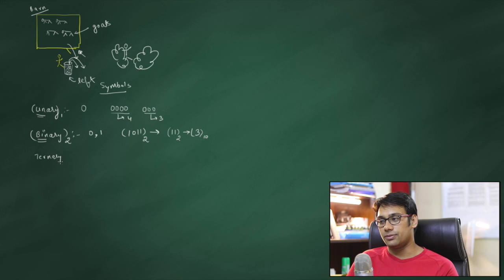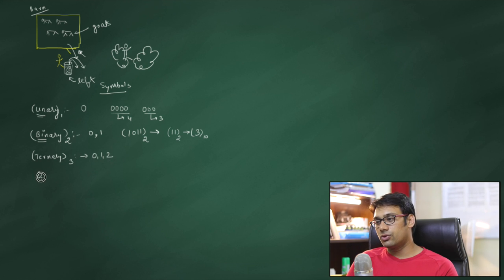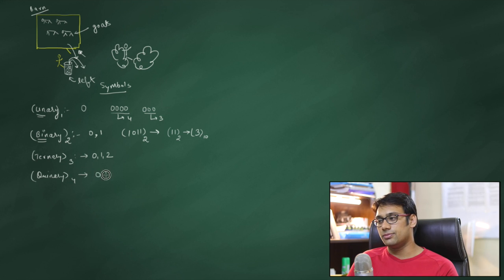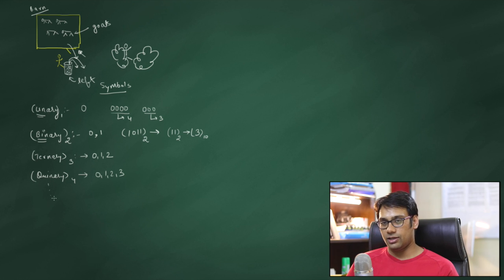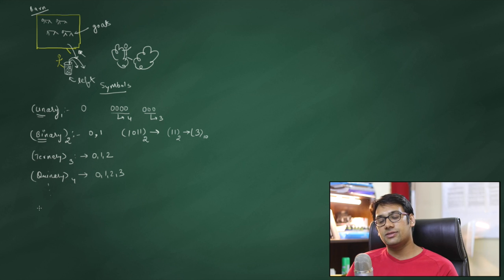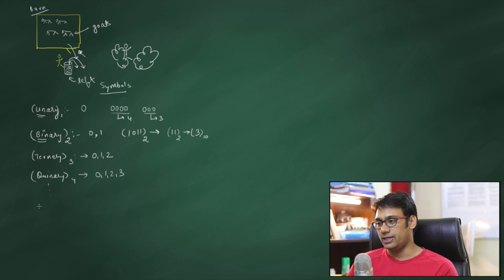Then we have the ternary number system, with base three, meaning three symbols. Similarly, we have the quaternary number system with base four and four symbols. In the same way, you can have any number system with any base — base 30, base 40, base 50. A number system with base 30 has 30 unique symbols.